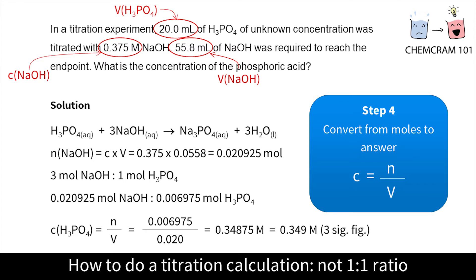Now we have the moles and volume of phosphoric acid so we can find the concentration. The least number of significant figures that we used in this calculation was three so we round the answer to three sig figs. Don't forget units.